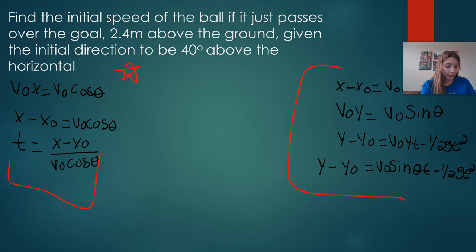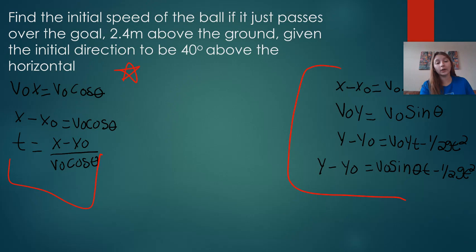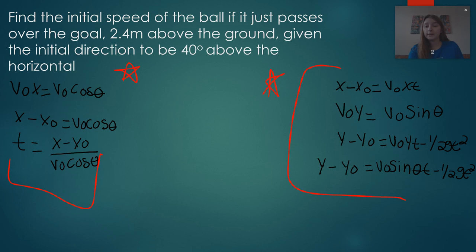We are going to start with the motion in the x direction and the x component of the initial velocity. So that has v naught x equals v naught cosine theta, and x minus x naught is equal to v naught cosine theta. Displacement gives us x minus x naught is equal to v naught x times t.